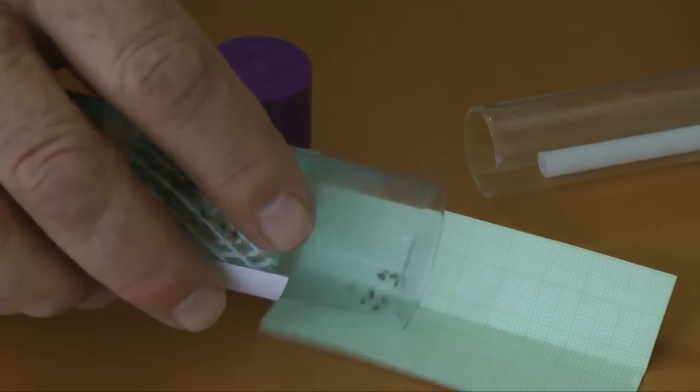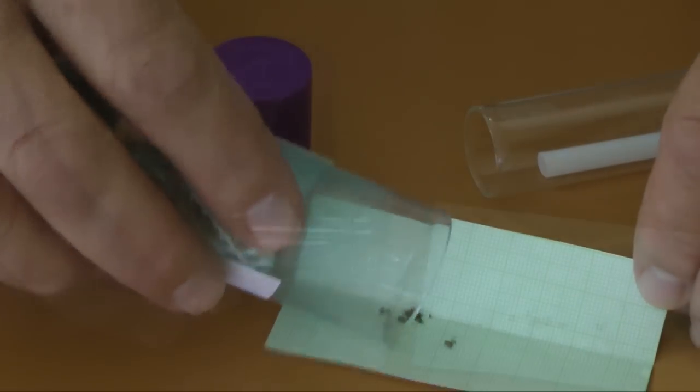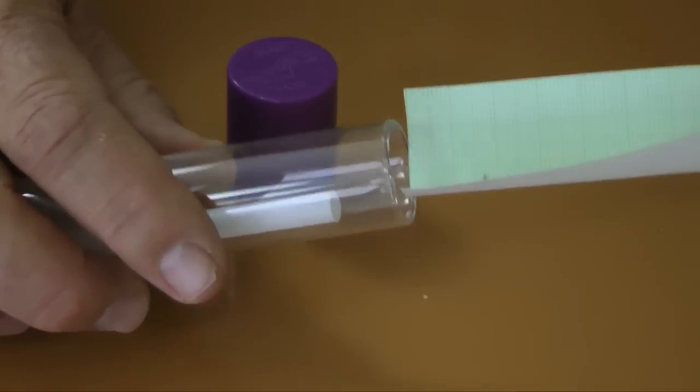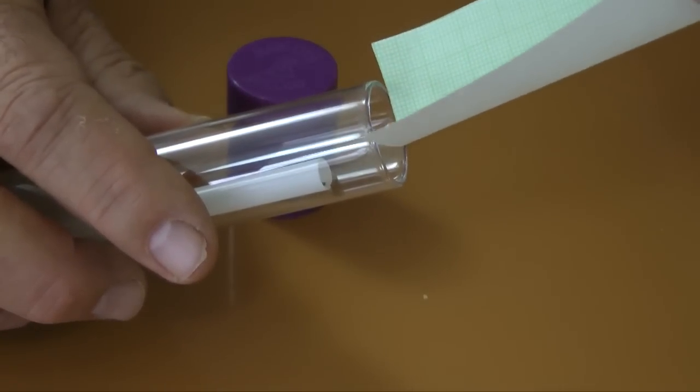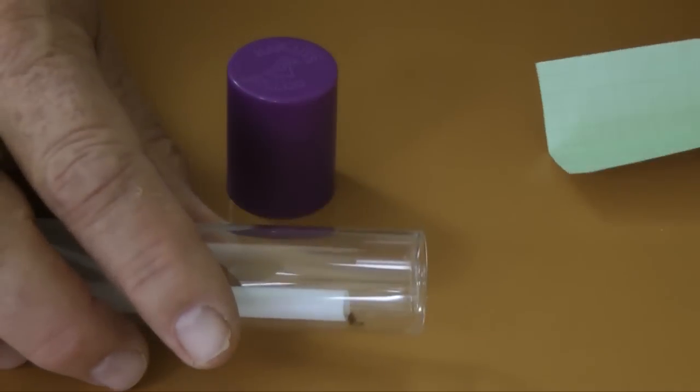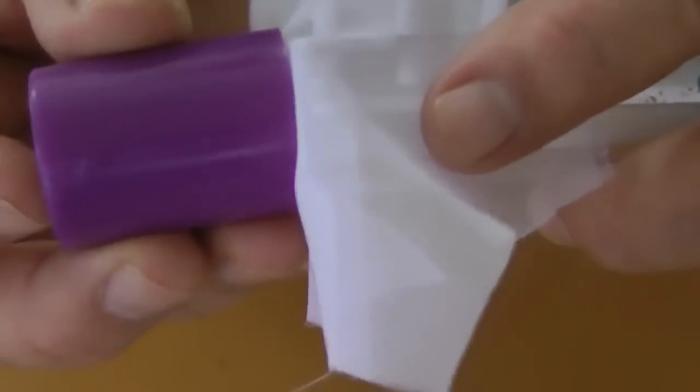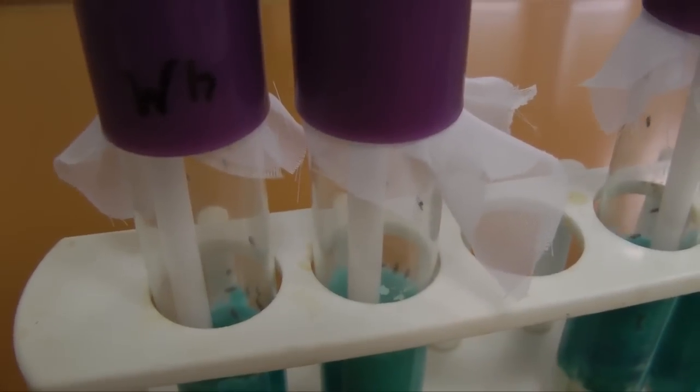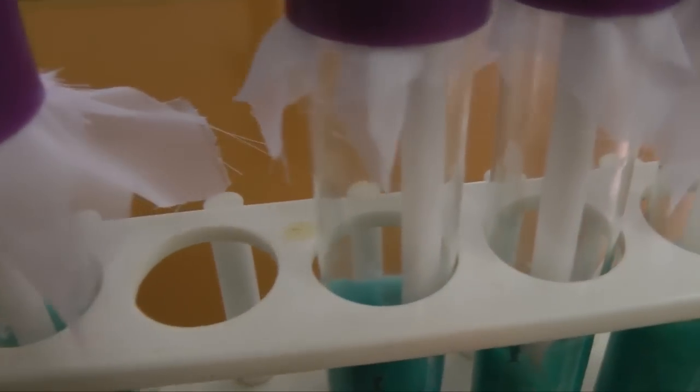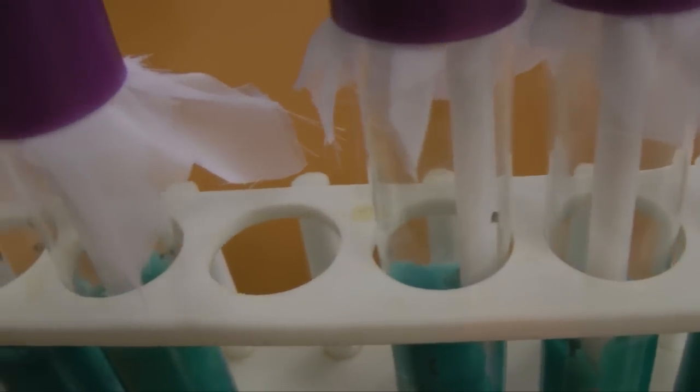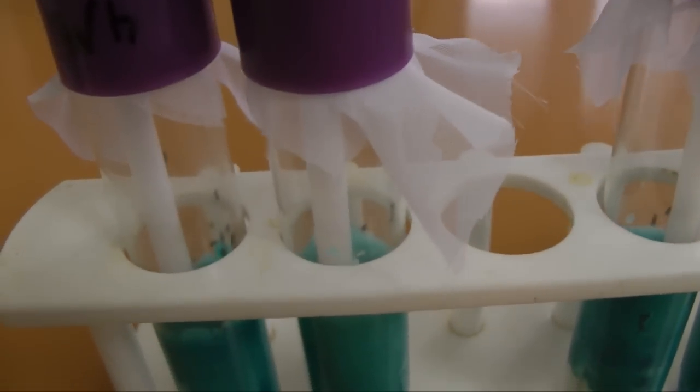Acting quickly, transfer flies into the new tubes. Keep the tubes on their side so the flies don't stick to the wet media. I'm using a banded fabric to cover the tubes. The caps fit loosely, allowing air exchange. As the flies warm up, they return to normal activity. Label the tubes with date and fly type.